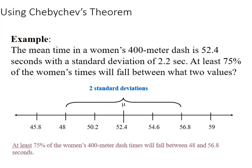Here's an example of Chebychev's theorem. The mean time in women's 400-meter dash is 52.4 seconds, standard deviation is 2.2 seconds, and at least 75 percent of the women's times will fall between what two values. If we use the formula 1 minus 1 over k squared, we can see at least 75 percent of the women's 400-meter dash times will fall between 48 and 56.8 seconds.